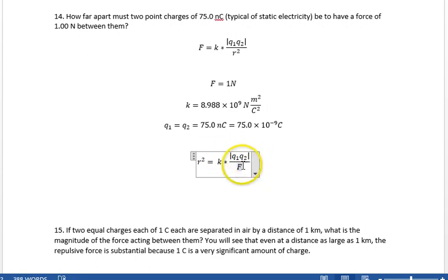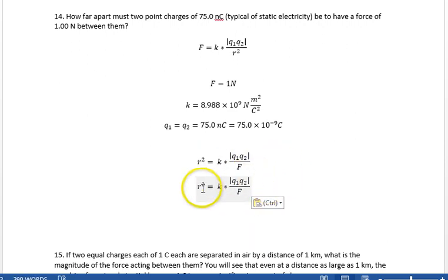And so, R itself is the square root of K Q1 Q2 divided by F.